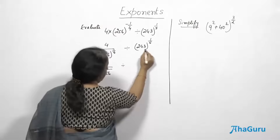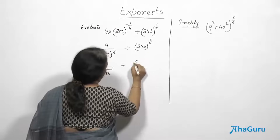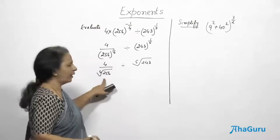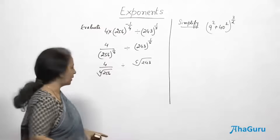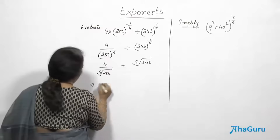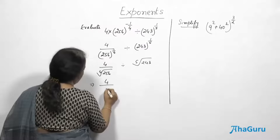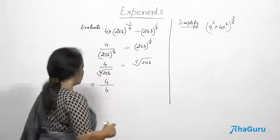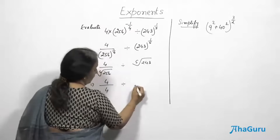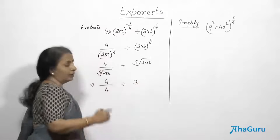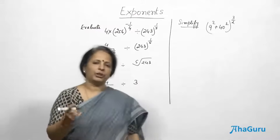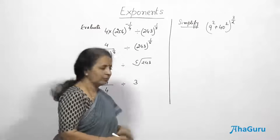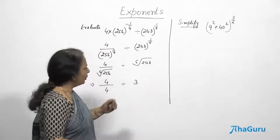Divided by the fifth root of 243 — both values you have to find by doing the prime factors. The fourth root of 256 is 4, because 4 × 4 × 4 × 4 = 256. For 243, it is 3 × 3 × 3 × 3 × 3 = 243 — that is, 3 multiplied 5 times.